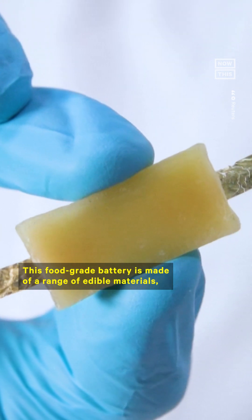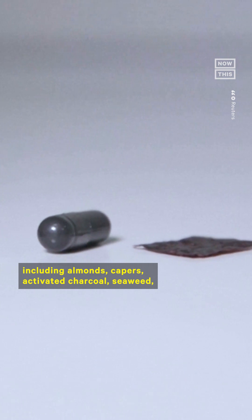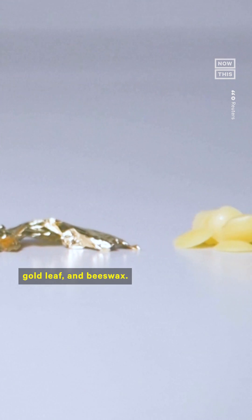This food grade battery is made of a range of edible materials, including almonds, capers, activated charcoal, seaweed, gold leaf, and beeswax.